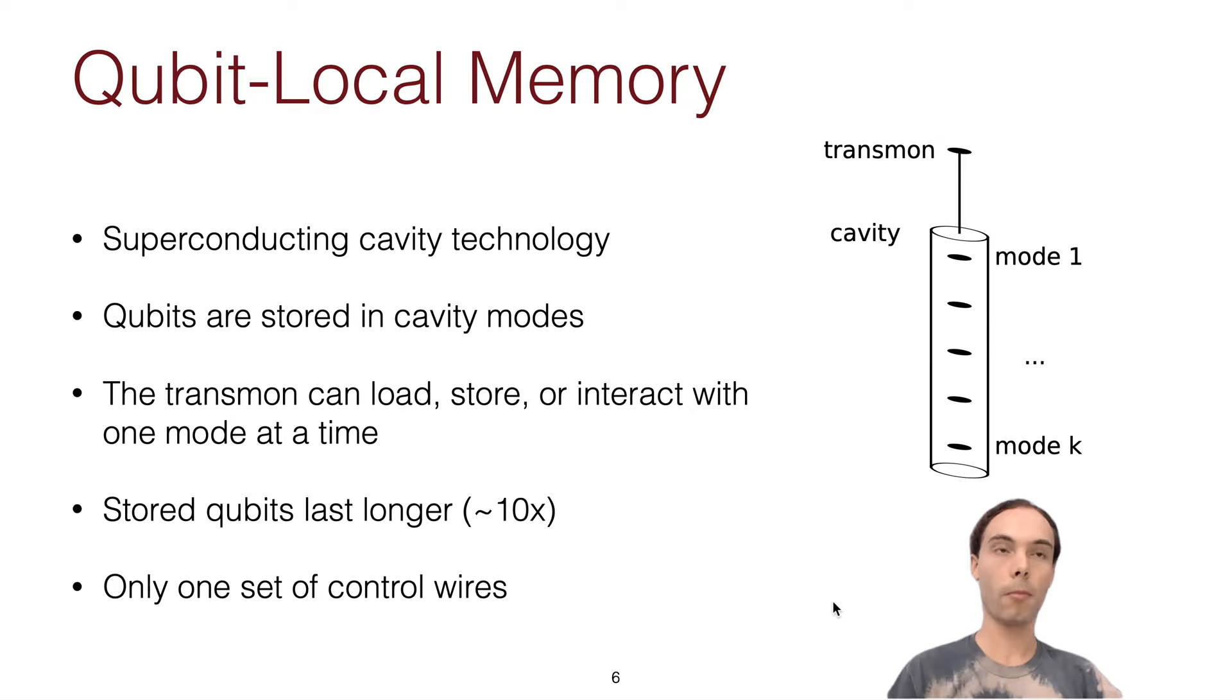So the technology that we take advantage of in this work is superconducting cavity technology, although any similar technology would also work. So this is where you have a cavity that can store photons with quantum information. So you can store, we say, about 10 qubits per cavity. And this transmon qubit at the top can randomly access any of the qubits inside to load, store, or do a two-qubit operation. And the advantage of this is that you have a single set of control lines to this transmon to control all the qubits in the cavity. And stored qubits last around 10 times longer in this cavity.